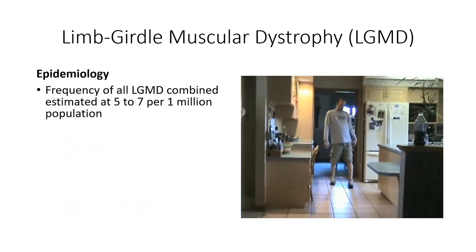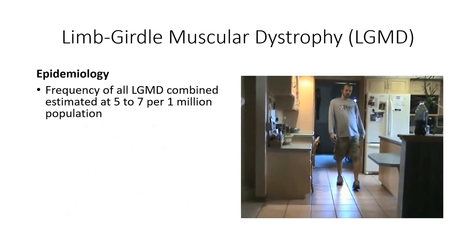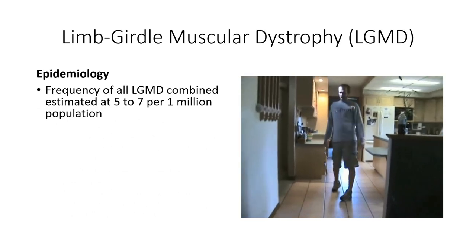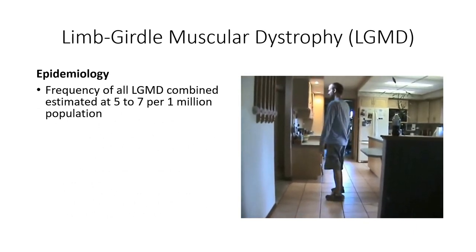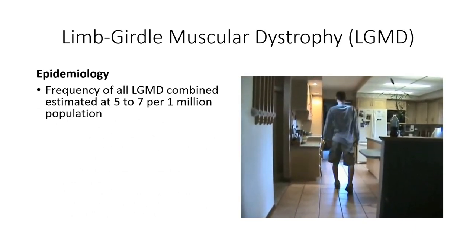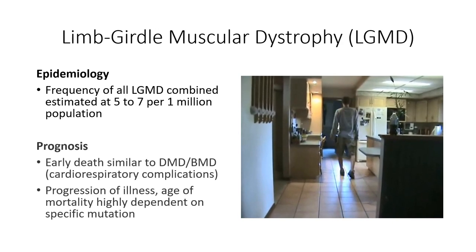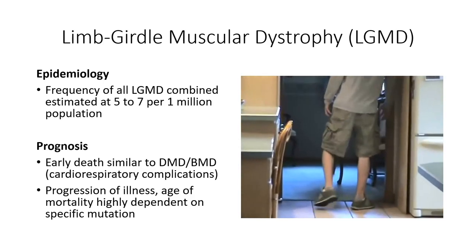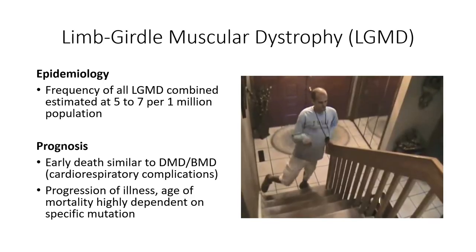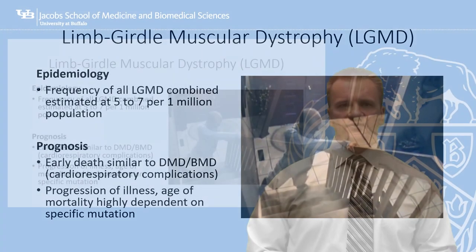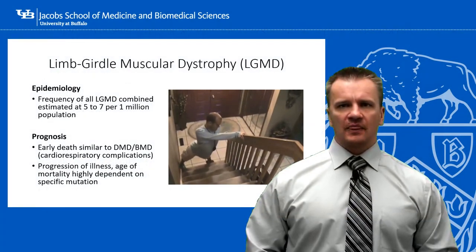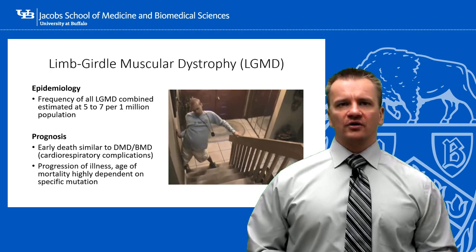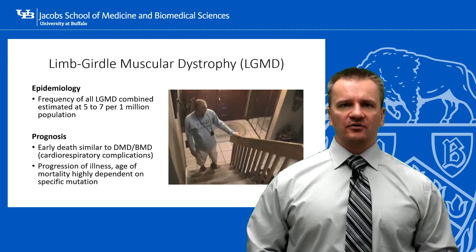Combined, the frequency of limb-girdle muscular dystrophy in the general population is about 5 to 7 per 1 million individuals, a rate much lower than that seen for Duchenne muscular dystrophy. This value likely under-represents the number of true cases, as some variants may appear so late in life and progress so slowly that the affected individual never seeks medical attention. For individuals with more severe impairment, lifespan is shortened due to compromised cardiorespiratory function.